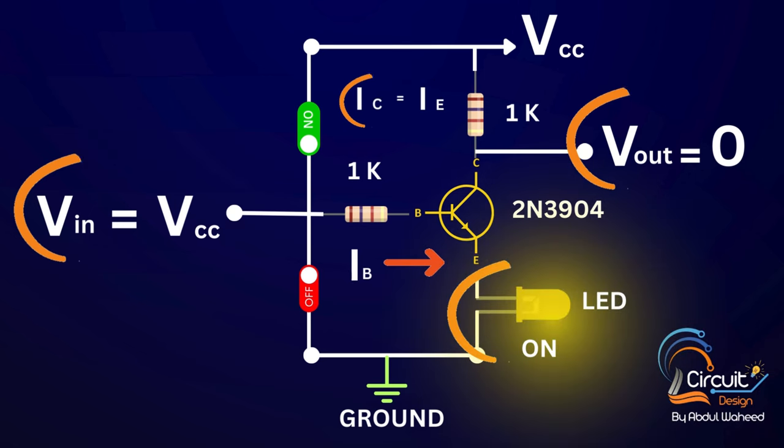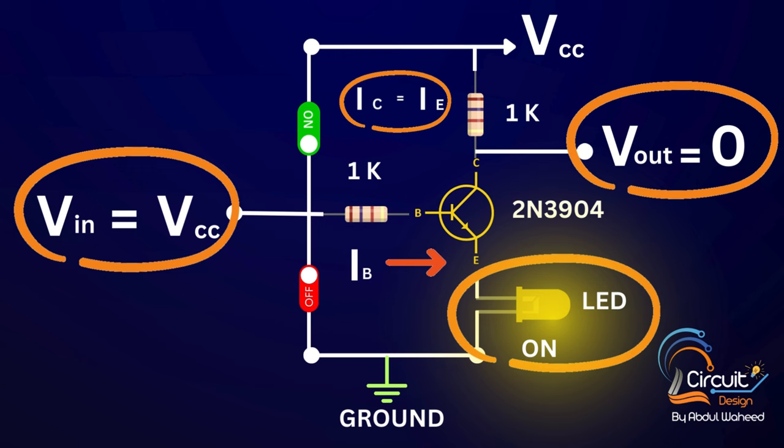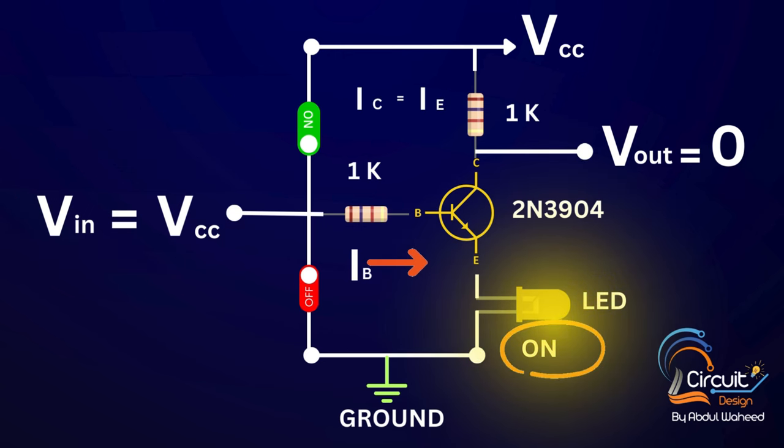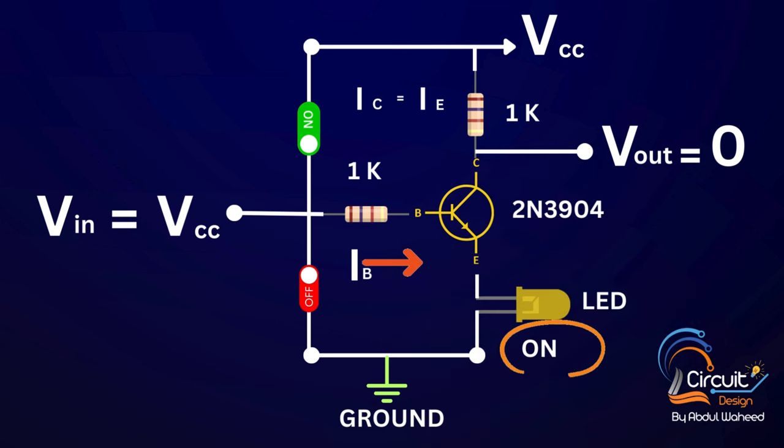Saturation region transistor as a closed switch. When the base voltage is applied, then transistor operates in saturation region and output voltage becomes zero. Saturation current starts flowing from collector to emitter of transistor, and light emitting diode starts glowing. In this region transistor shows the characteristics of a closed switch.